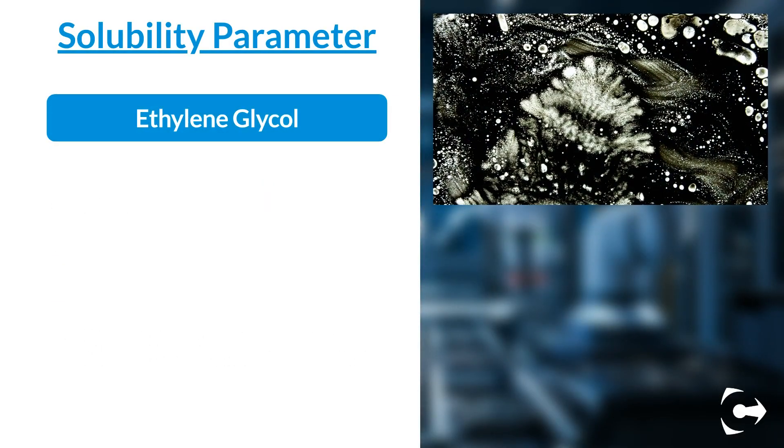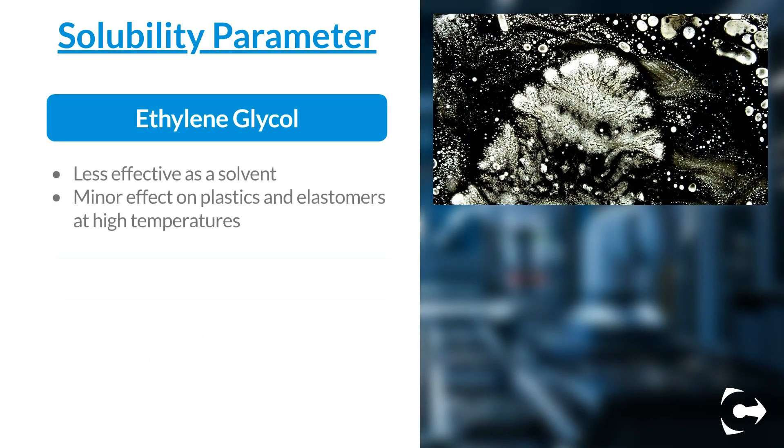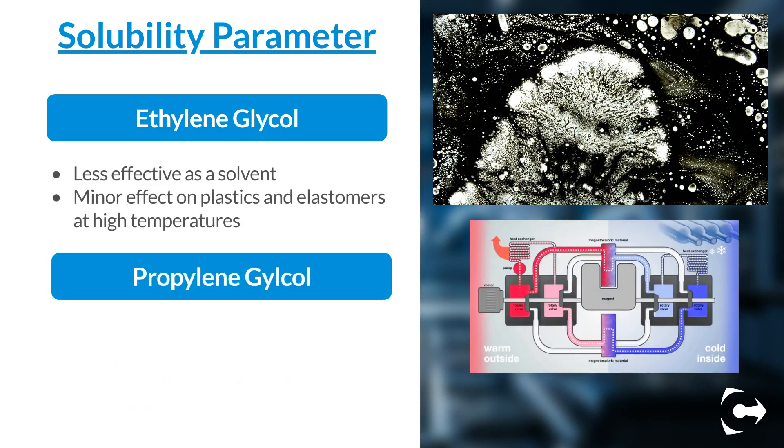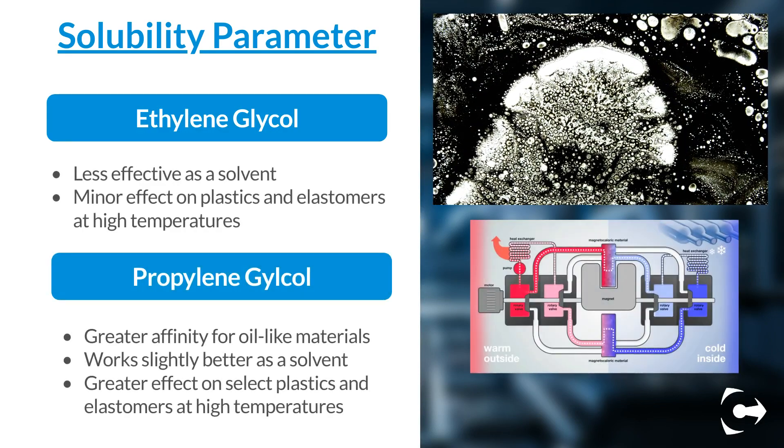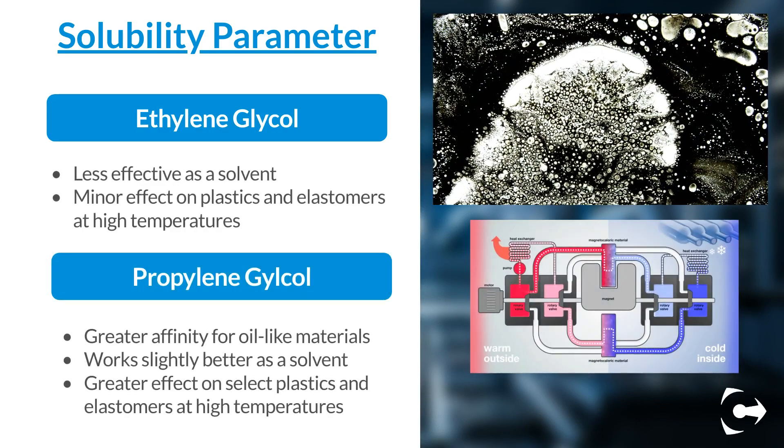PG acts as a slightly better solvent compared to EG, and can have a greater effect on some elastomers and plastics at higher temperatures.